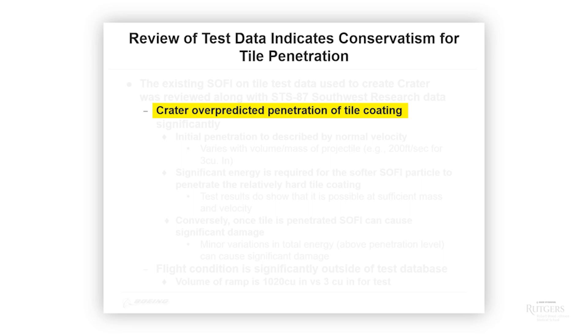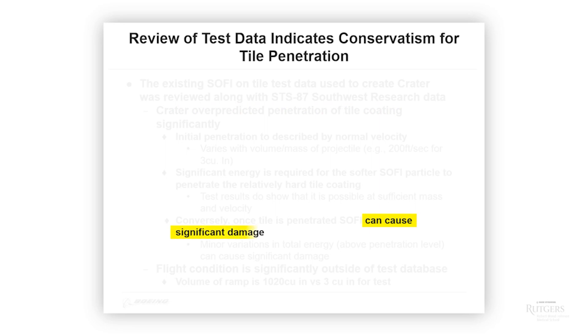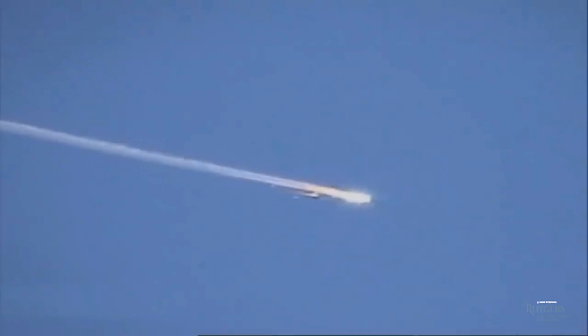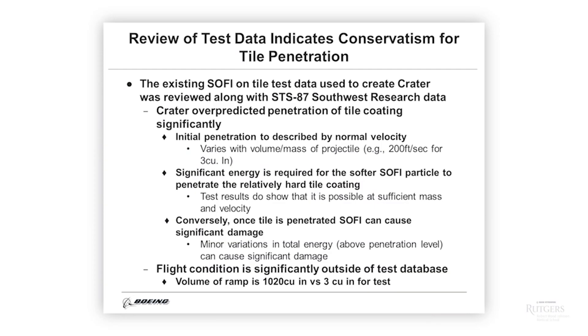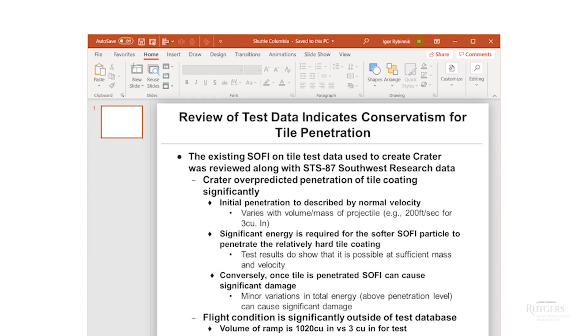It's not until you get to the bottom of the slide that you see words like 'can cause significant damage' and 'flight condition is significantly outside of test database.' After orbiting for two weeks with an undetected hole in its wing, the shuttle Columbia burnt up on re-entry. The presentation certainly cannot take all the blame, but this is an extreme example where slides at best misled and at worst harmed decision-making.